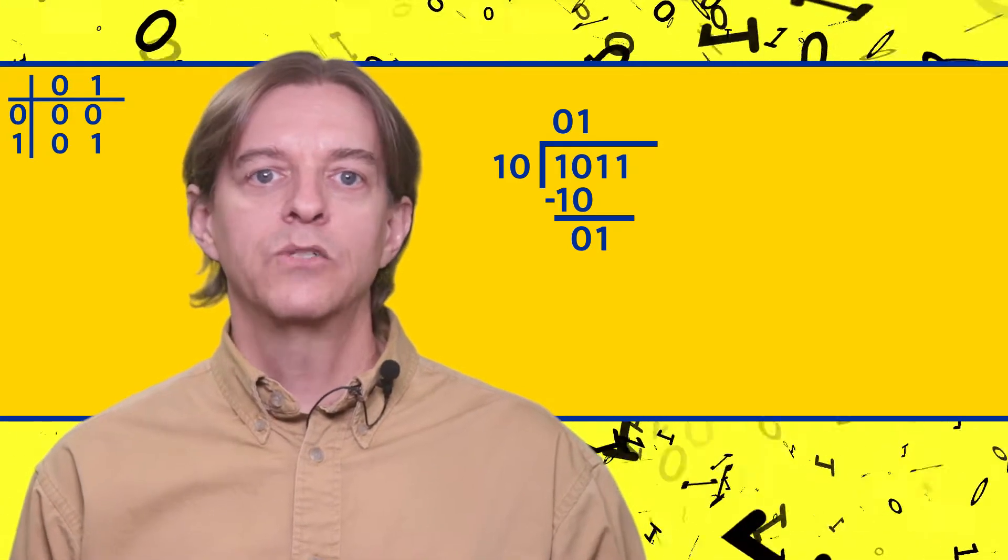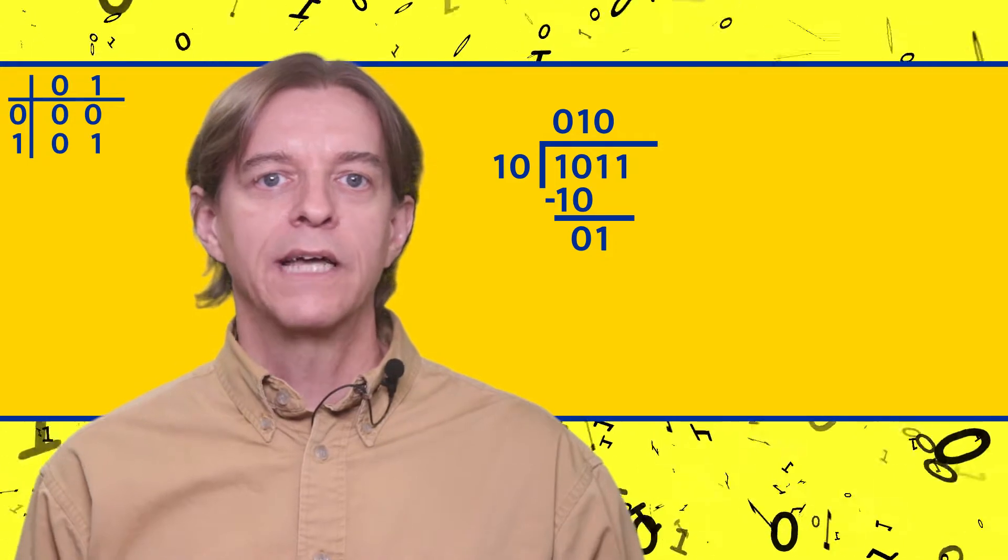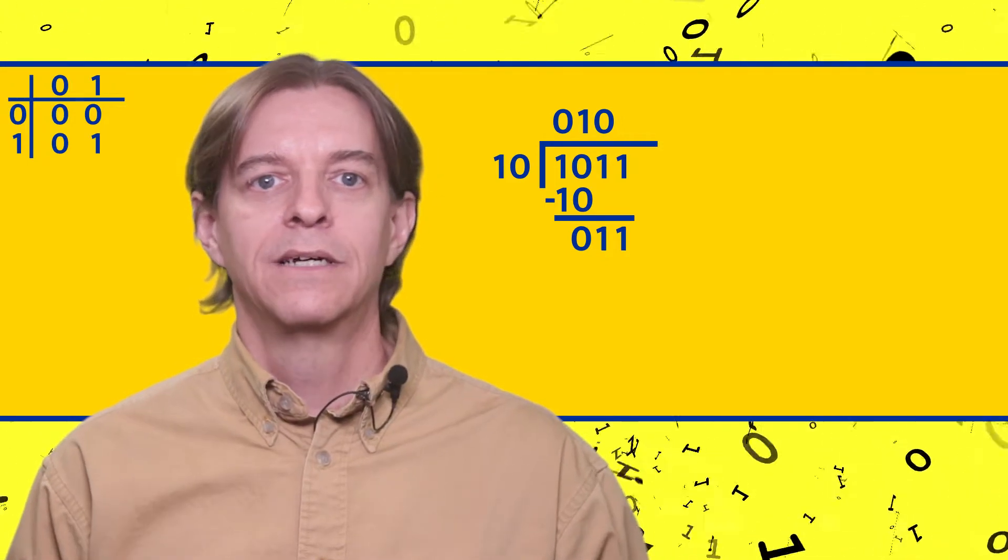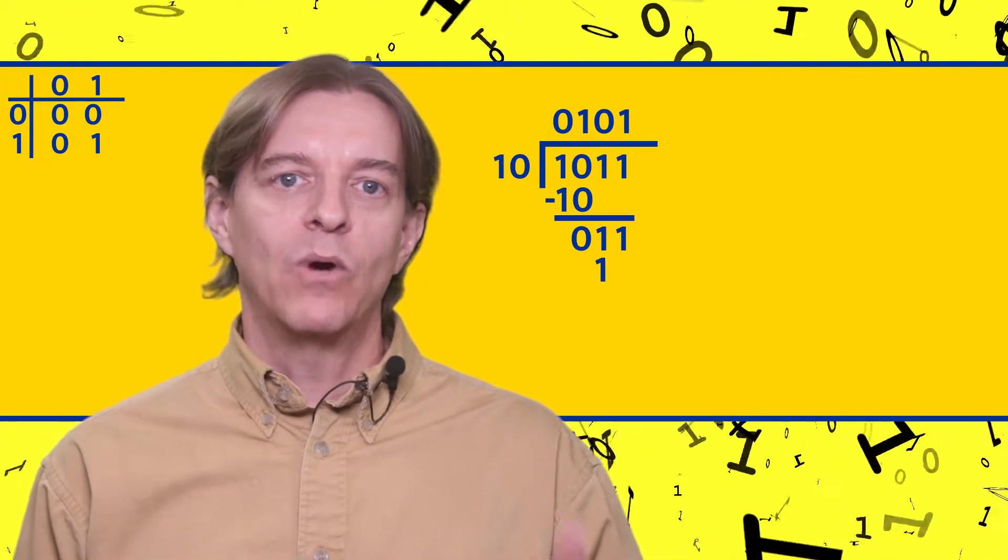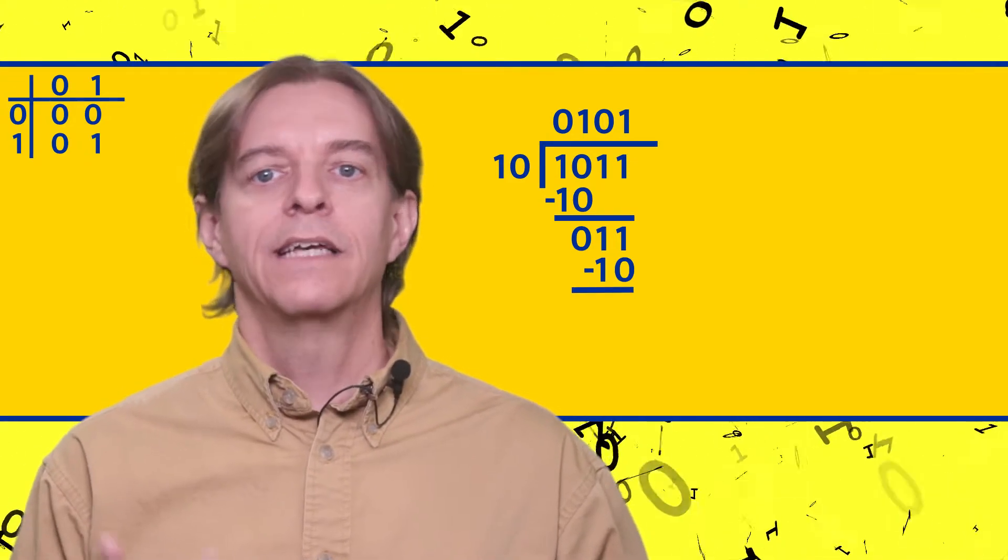10 is greater than 1, so we put a zero in the quotient, and we bring down the next one. 11 is greater than 10, so we put a one in the quotient, and 10 underneath, subtract, giving us one.